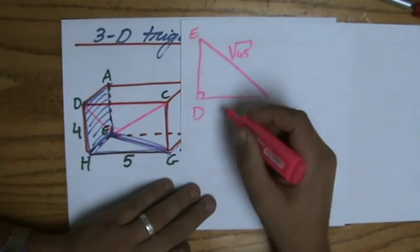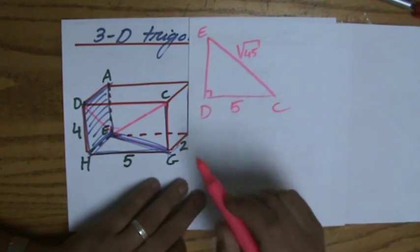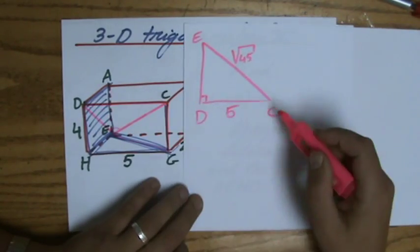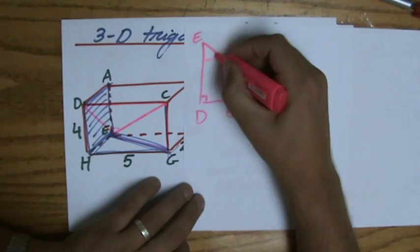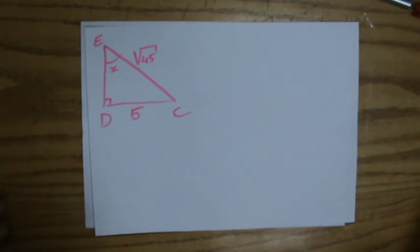I'm going to put the square root of 45. What else do I know? I know DC is 5. Then we're looking for which angle? CED, so we're looking for this angle.